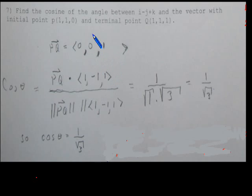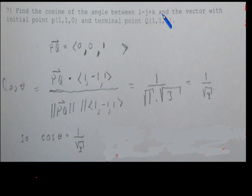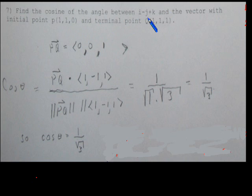We want to find the cosine of the angle between the vector i minus j plus k and the vector with initial point P(1,1,0) and terminal point Q(1,1,1).